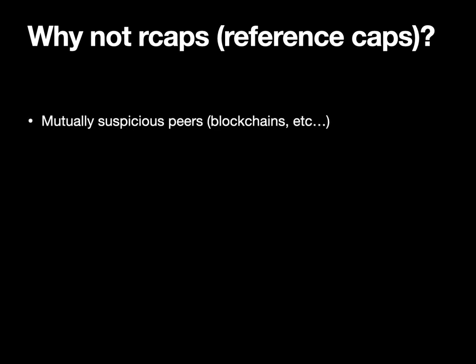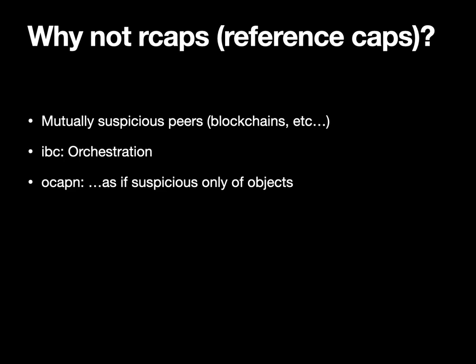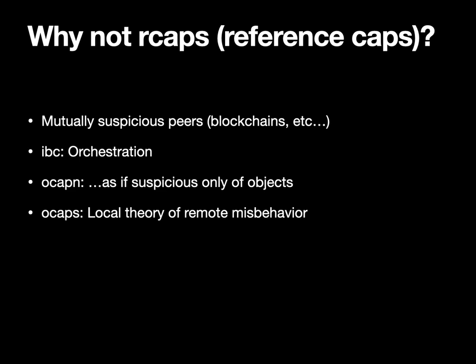Our constraints are mutually suspicious peers — blockchains and other machines. The VAT-to-VAT communication basically just needs to be a secure bi-directional data pipe: TLS among normal machines, and IBC — the inter-blockchain protocol — which provides TLS-like bi-directional data pipes between blockchains. In both cases, what we build on top of that is OCAPN, our cryptographic distributed remote invocation object capability protocol. Having done that, OCAPs becomes a good local theory of the possibility of remote misbehavior.